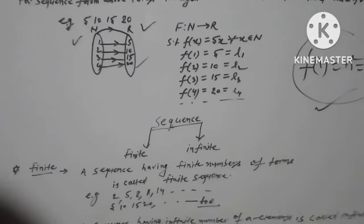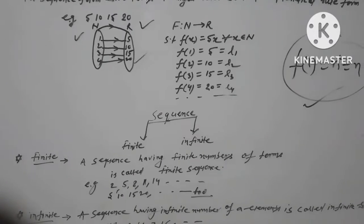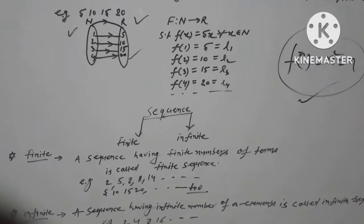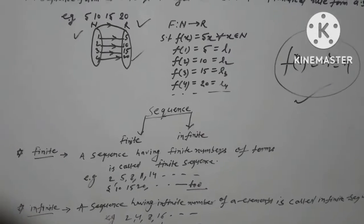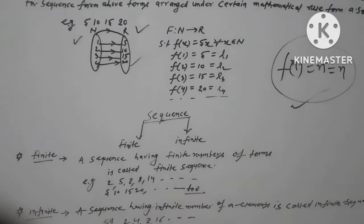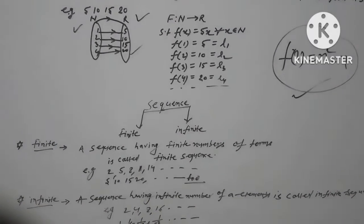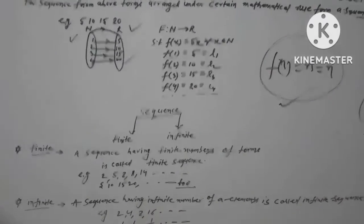Finite: a sequence having finite number of terms is called a finite sequence. Examples: 2, 5, 8, 11, 14. Another example: 5, 10, 15, 20 dot dot dot 100.